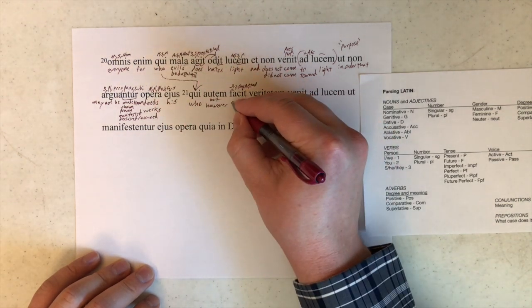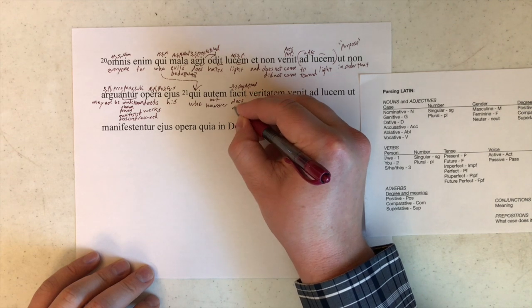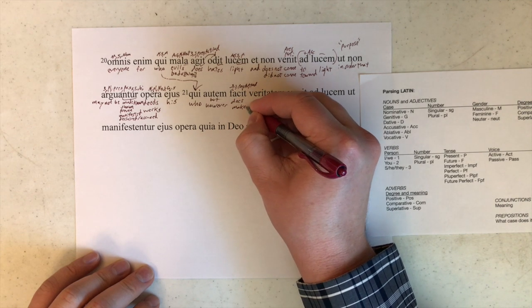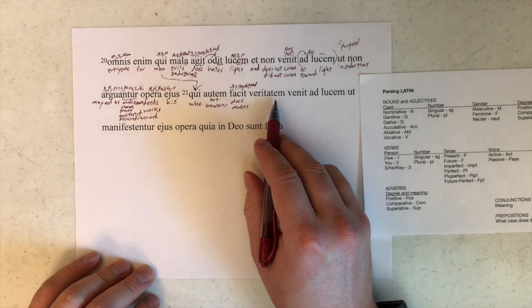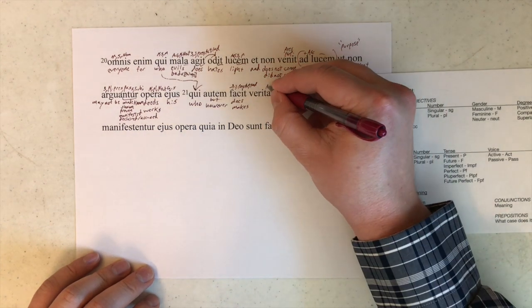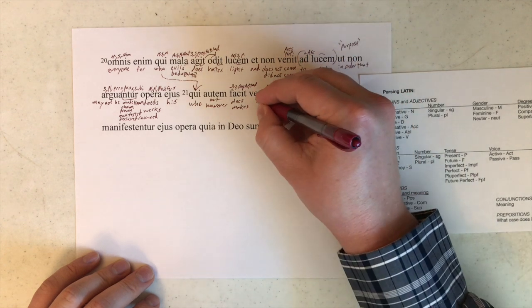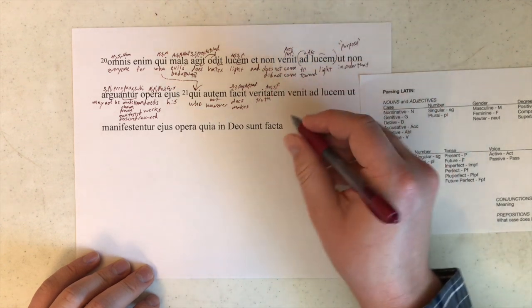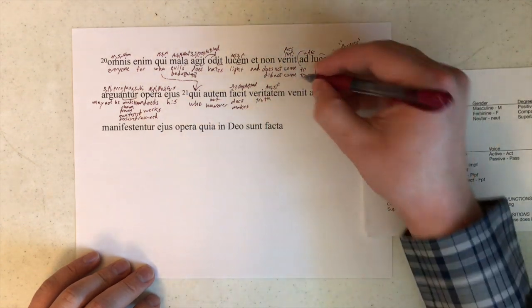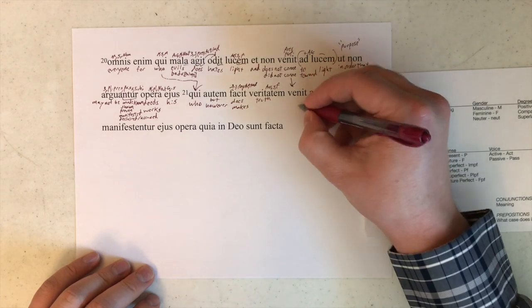Who does or makes weditatem. The em right there is accusative, singular, and feminine form. Truth. When it. Exact same as that one, so I'm just going to draw that down. Same two options.